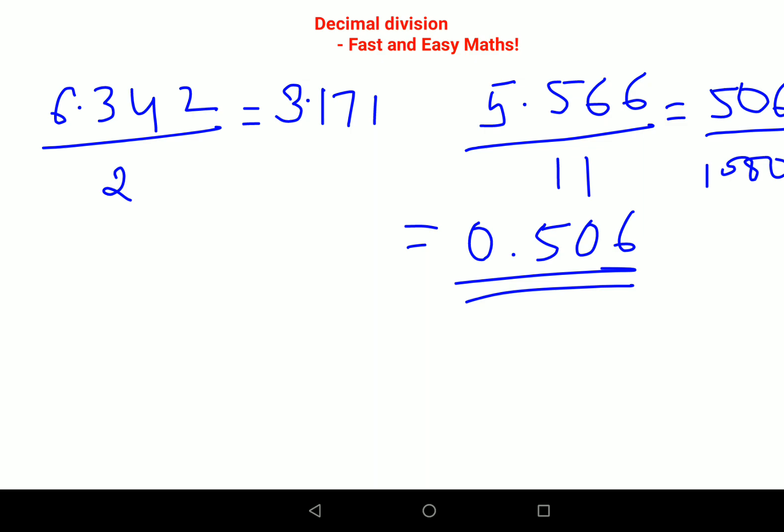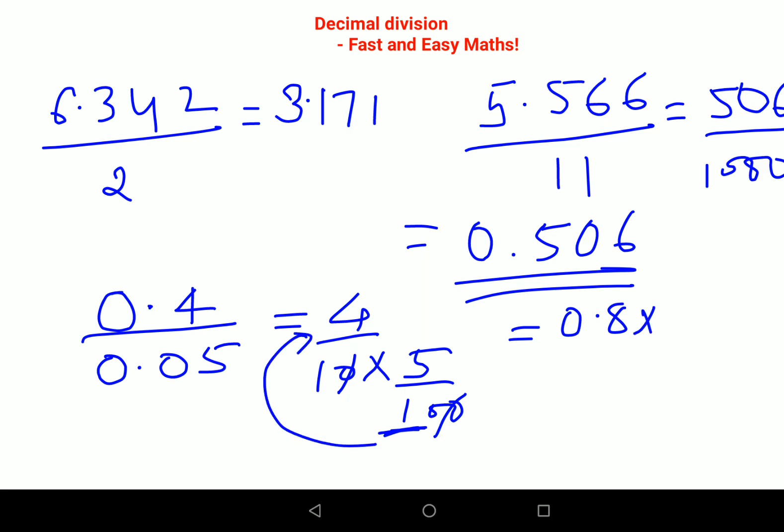Now just for understanding sake we take something like this: let's say 0.4 divide by 0.05. If that is the case, then what do you do? Let's very quickly write this as 4 upon 10 into 5 upon 100. Again these zeros are cancelling, so you will divide 4 and 5. So 4 divide by 5 is 0.8, but since there is a denominator to your denominator, this 10 will get multiplied to your answer. So this will be 0.8 into 10. So your final answer will be just 8.